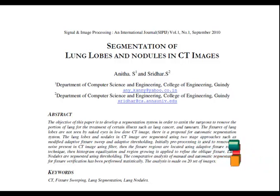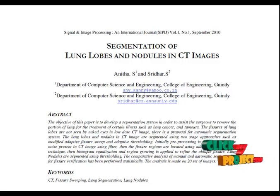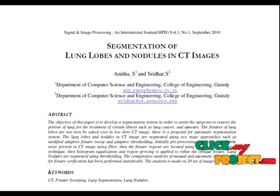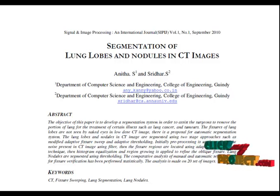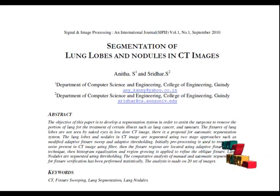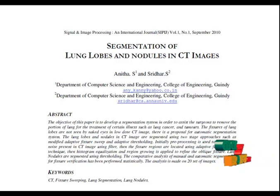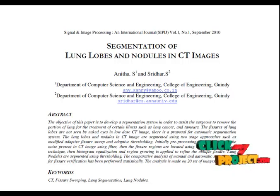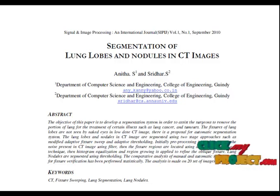Initially, pre-processing is used to remove noise. Here we are using the VNR filter to remove noise. The noise-free images are passed to further processing. Then we segment the lungs from the CT image. From the segmented lung, we extract the fissure region using the adaptive fissure sweeping technique. Lung nodules are segmented using thresholding.